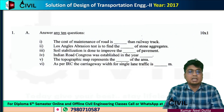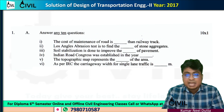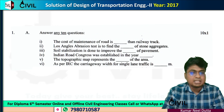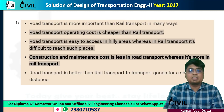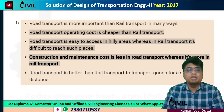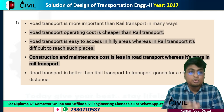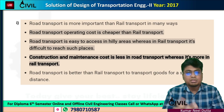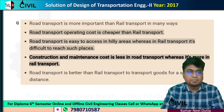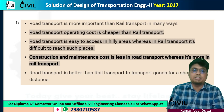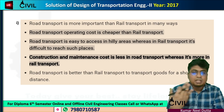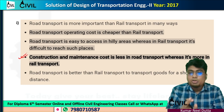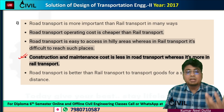The first question is: the cost of maintenance of road is less than railway track — is this less than or more? The cost of maintenance is more in railway transport. The cost and maintenance cost is less in road transport whereas it is more in railway transport.